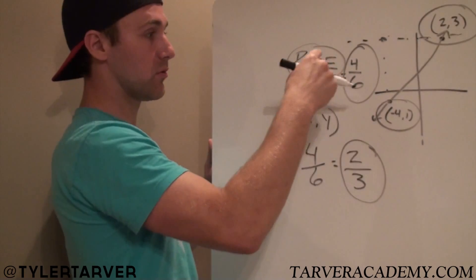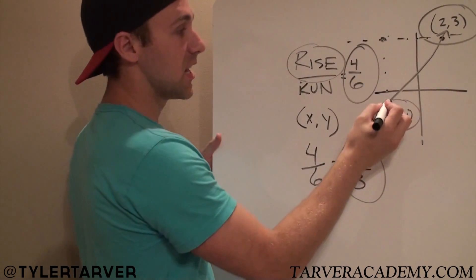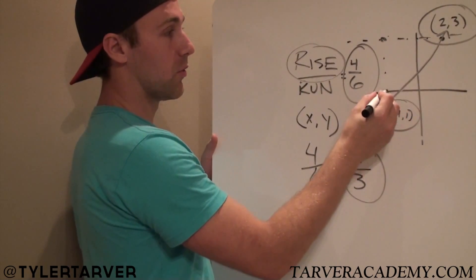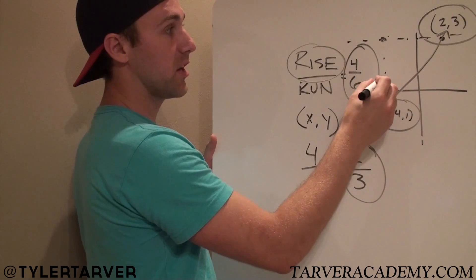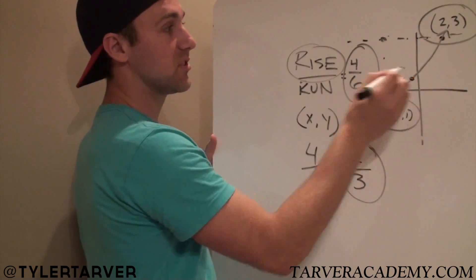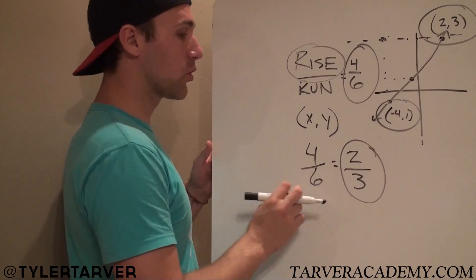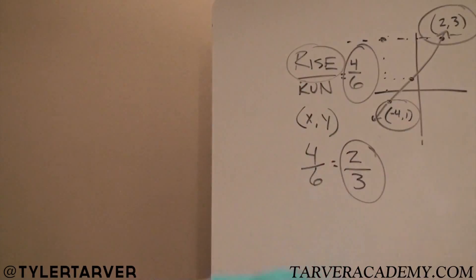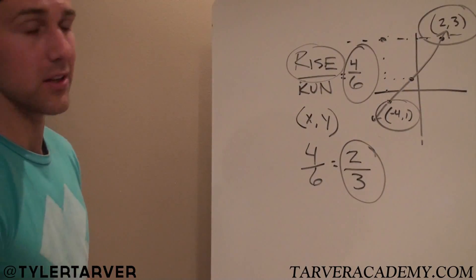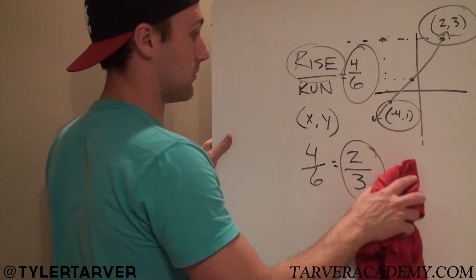We rose 2, ran 3. Watch this. If you went up 2 from here, 1, 2, and you went over 3, 1, 2, 3, you would still land on that line. It's cool, right? Cool, cool, cool. Now that's the slope, but that's not the slope formula. You know what I'm saying? That's not the slope formula.